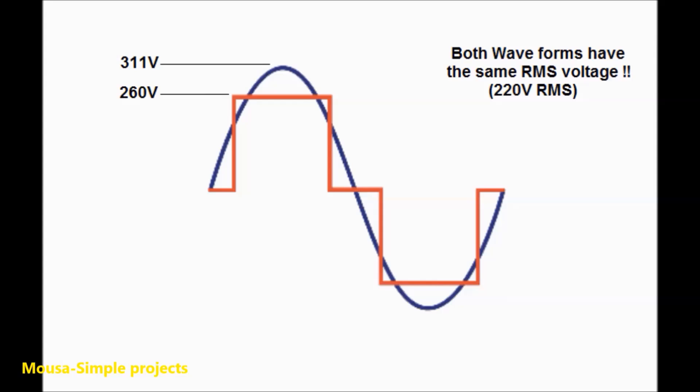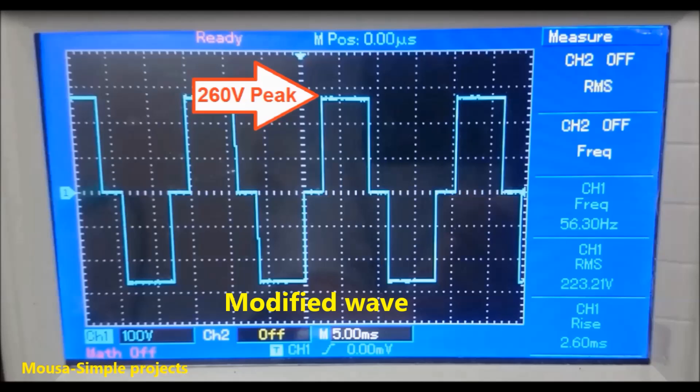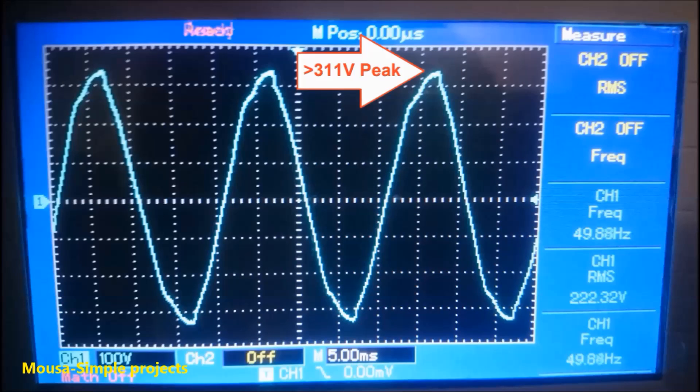The square wave peak voltage should be 260 volt to give us 220 volt RMS, but the sine wave peak voltage should be 311 volts to give us 220 volt RMS.